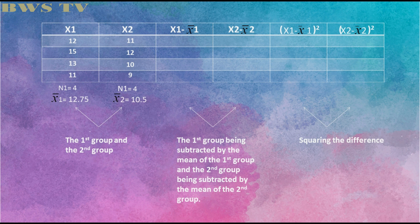In the two columns, subtract each given in each column to its corresponding mean of the group. For example, 12 minus 12.75 is equal to negative 0.75. Continue doing the same thing in the next column. Here are the answers.